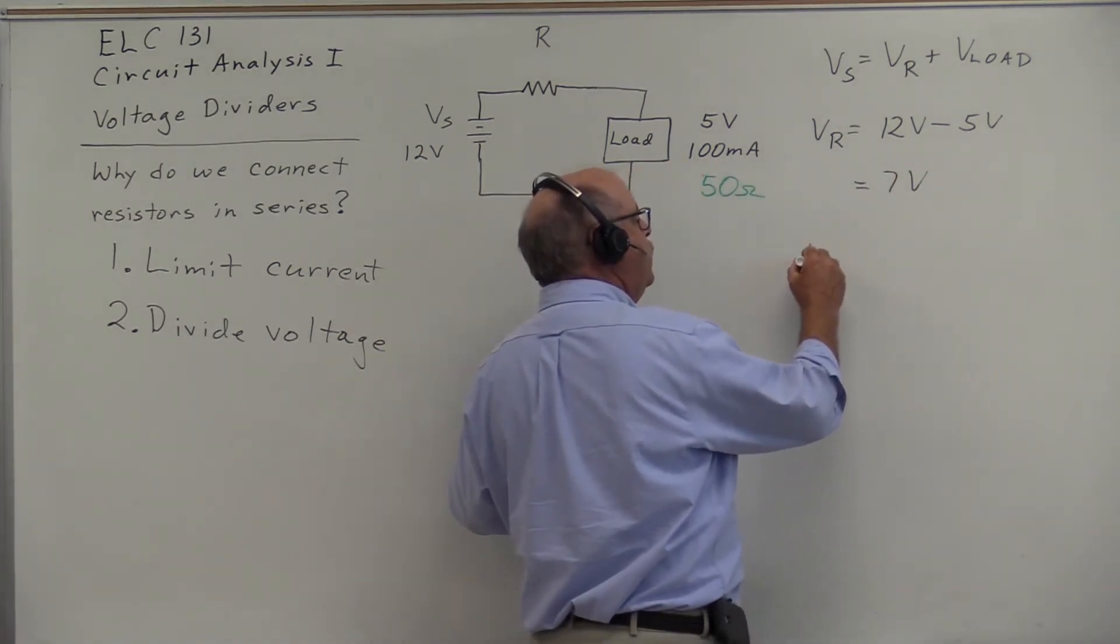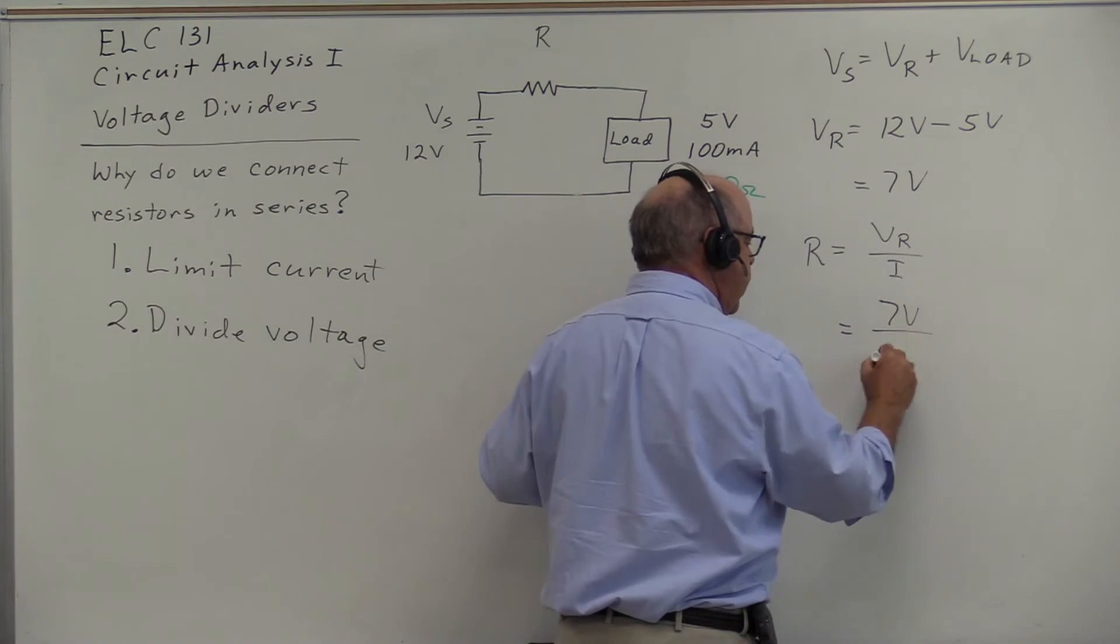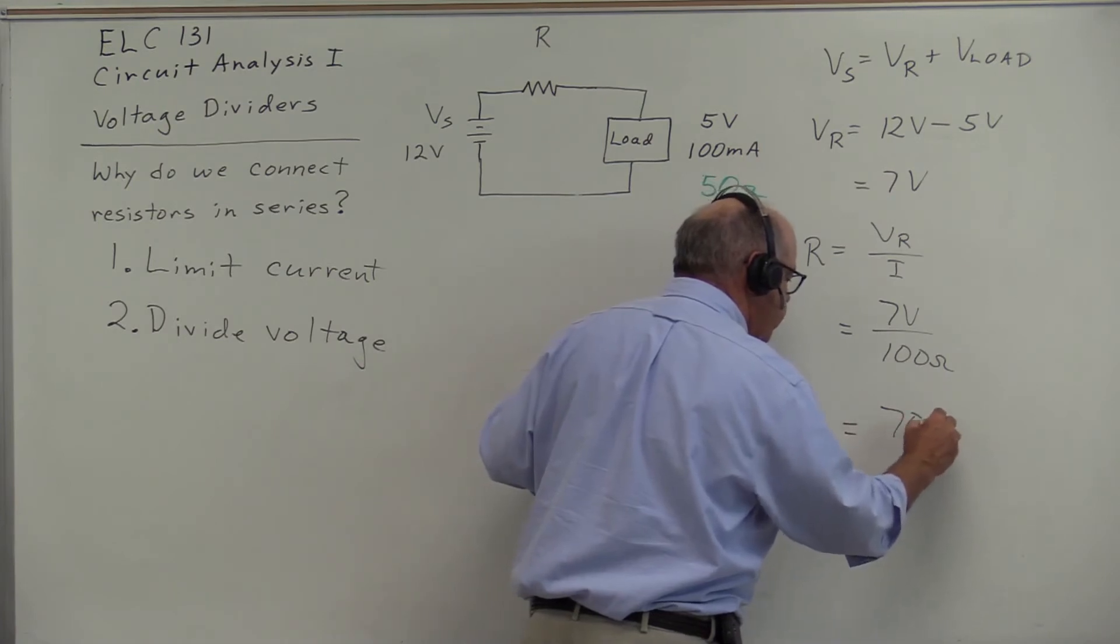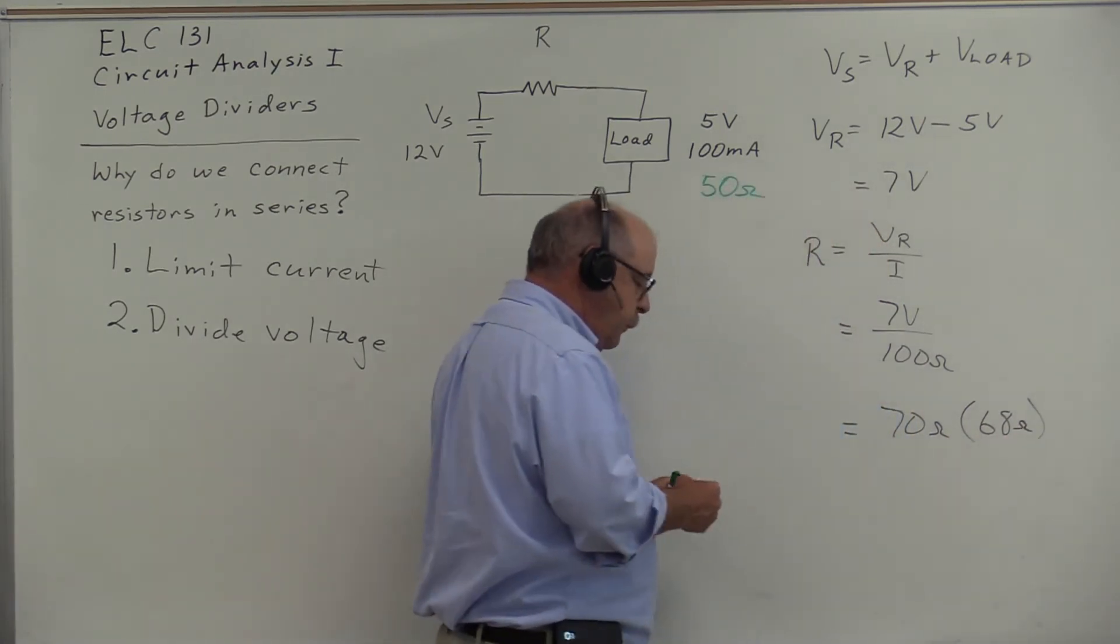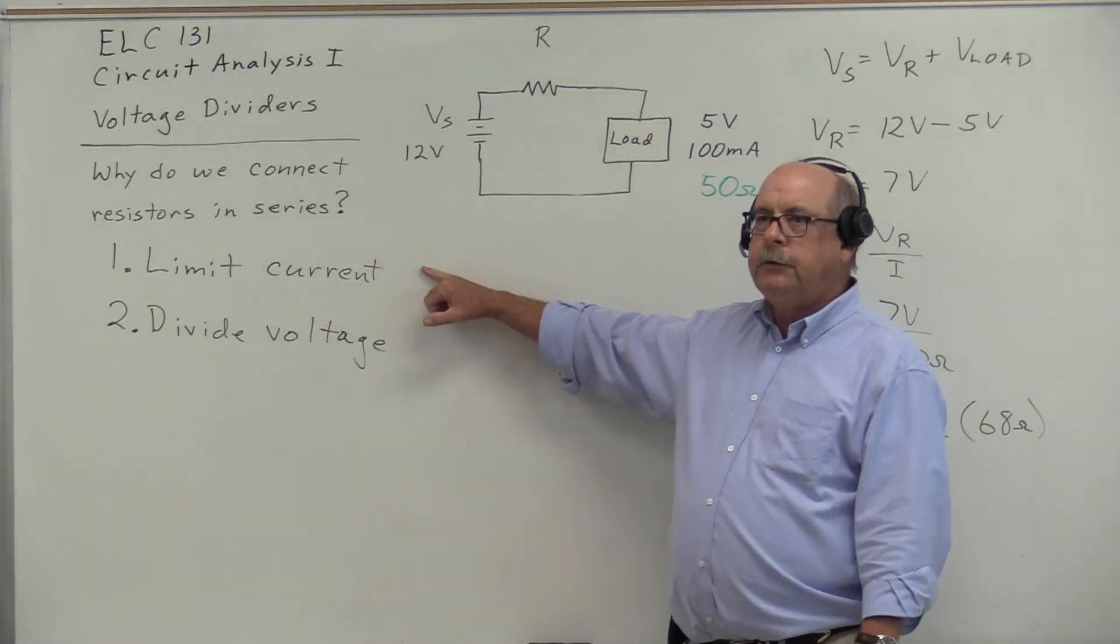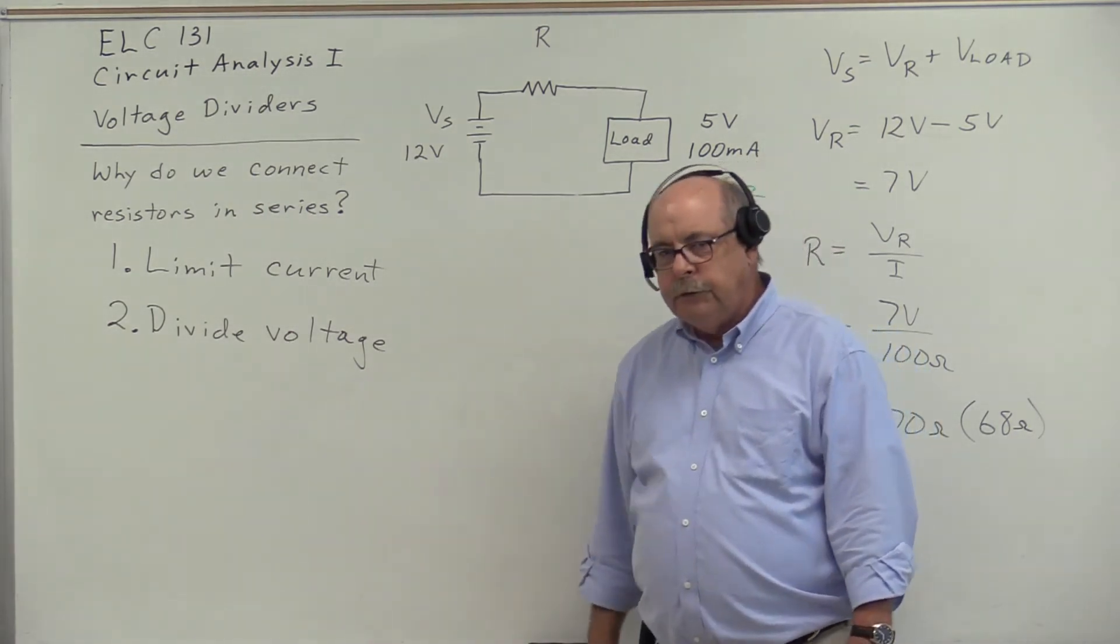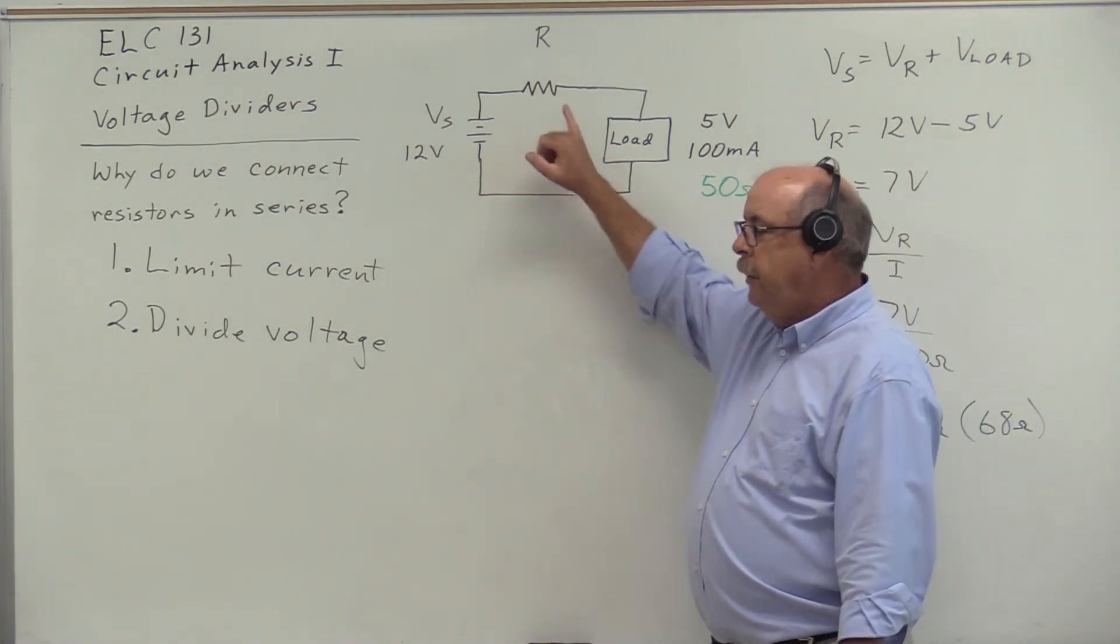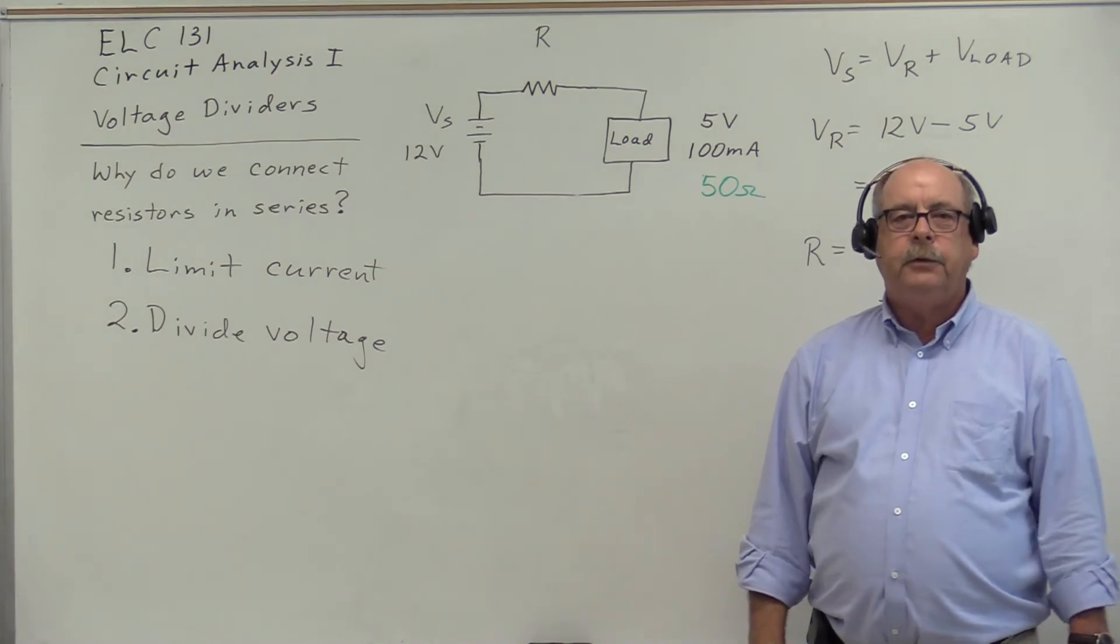The value of resistance equals V_R over I, 7 volts divided by 100 milliamps gives us 70 ohms. Again, our closest standard value is 68 ohms. It doesn't matter whether we approach the problem by thinking about what value of resistance is required to limit the current or to divide this 12 volts up into a 7 volt piece and a 5 volt piece. The result is the same; it's just a matter of perspective.